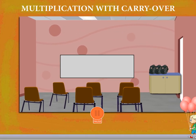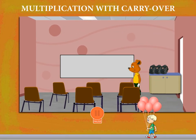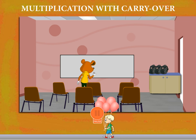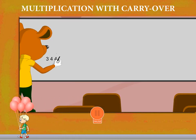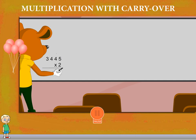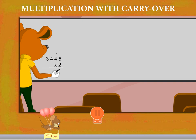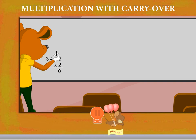Multiplication with carryover. Robbie is in the class to show multiplication with carryover. He has to multiply 3445 by 2. He multiplies the ones. 2 into 5 is 10. So he writes 0 and carries 1 ten.